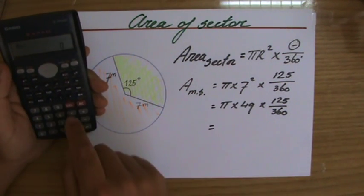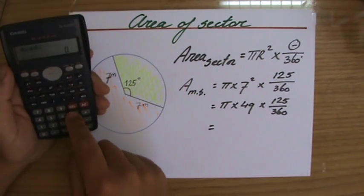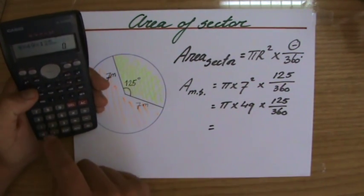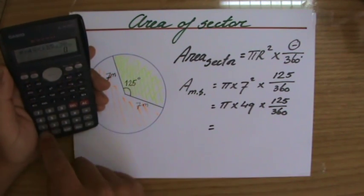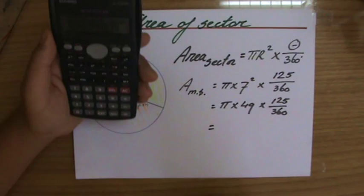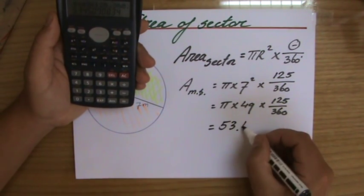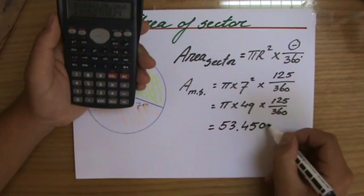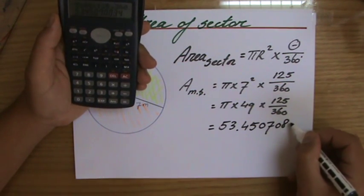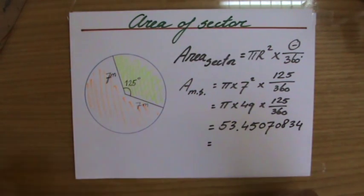There we go. π times 49 - seven squared - times 125 out of 360. And that equals 53.45070834.